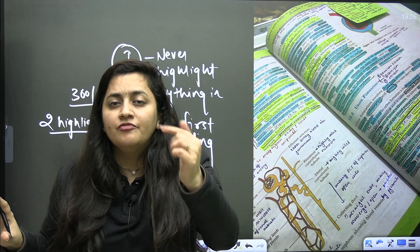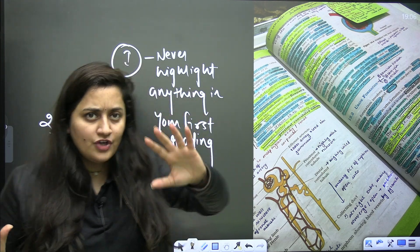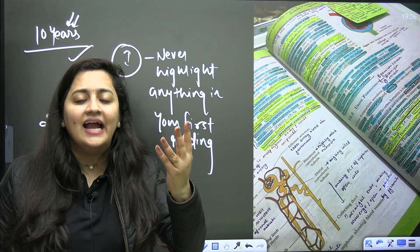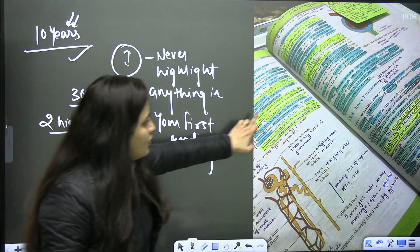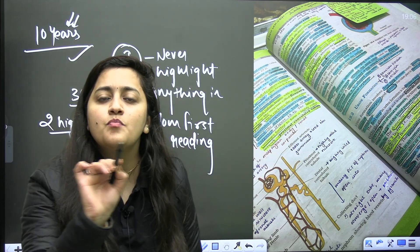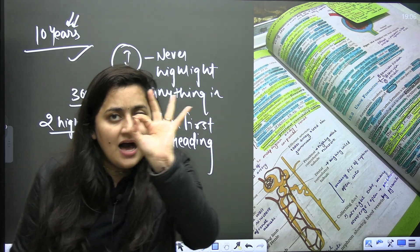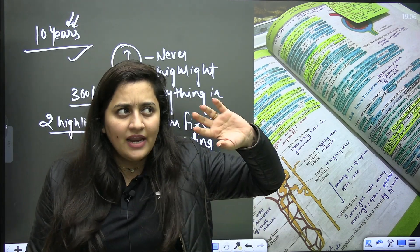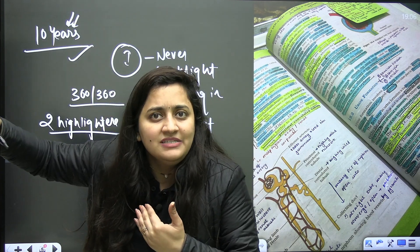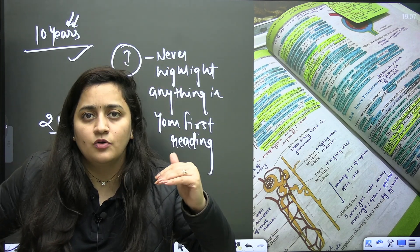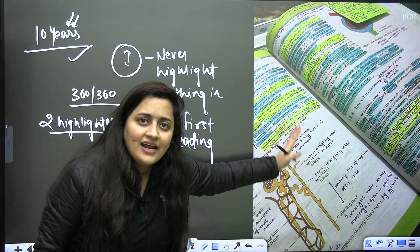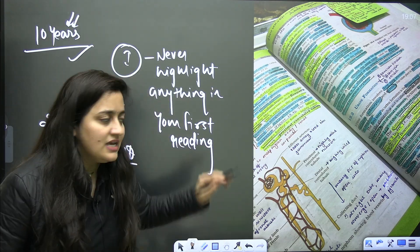Check at least 10 years of previous year papers — do not miss the last 10 years. That will give you an idea of what kind of question can come from a particular chapter. Use one marker to highlight important PYQ statements across all NCERT chapters. Then use a second highlighter to mark statements that you usually forget. After completing a chapter and giving a mock test, wherever you make mistakes, highlight those points with the other highlighter on the NCERT directly.